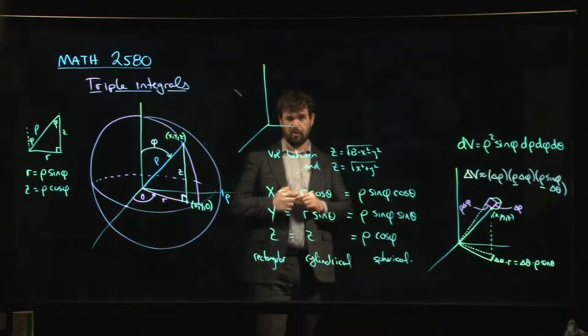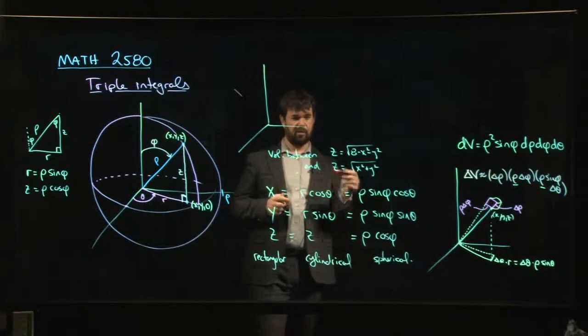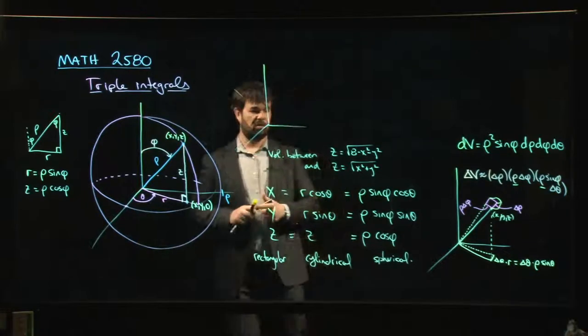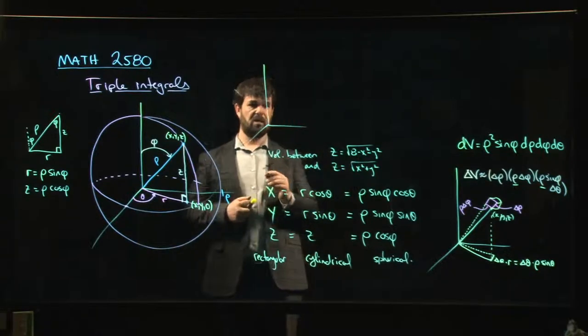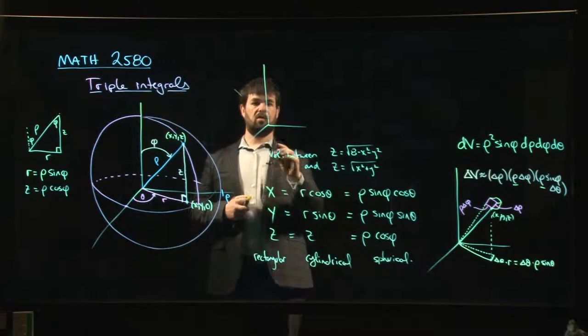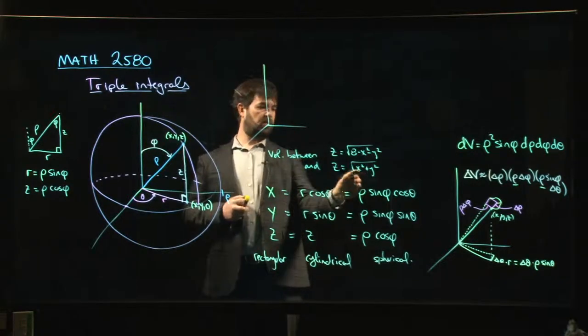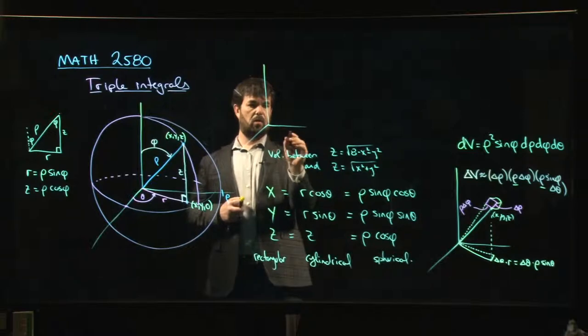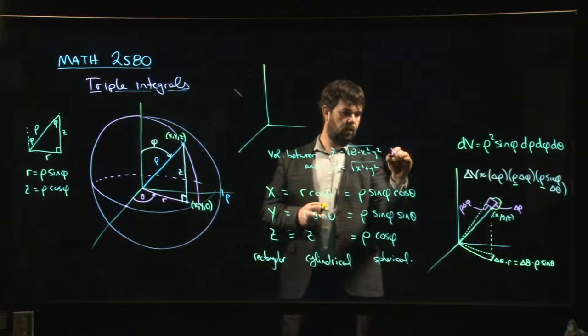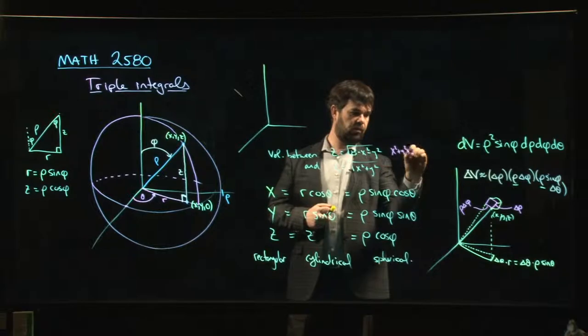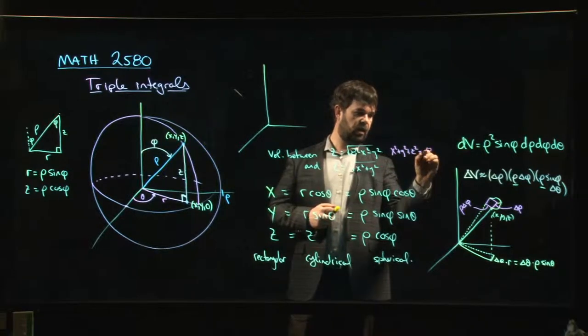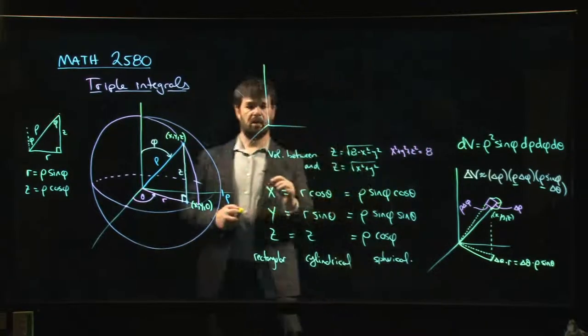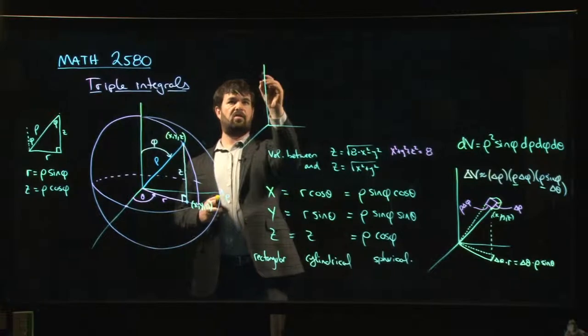So we saw this one in an earlier video, and we did it. In fact, we set things up in cylindrical coordinates. This is one of our examples that kind of led us into considering cylindrical coordinates. So what we can do, this we know is a cone, and this one, we know this is just x squared plus y squared plus z squared equals 8. So there's kind of two elements here. There's a sphere.